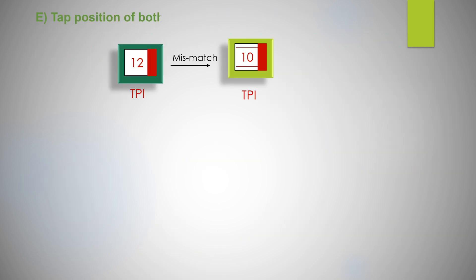Tap position of both transformers should be same. During tap changing, secondary voltage of both should be the same. At RTCC panel, master-follower arrangement should be incorporated to avoid any mismatch of tap position. Voltages at different taps are different.